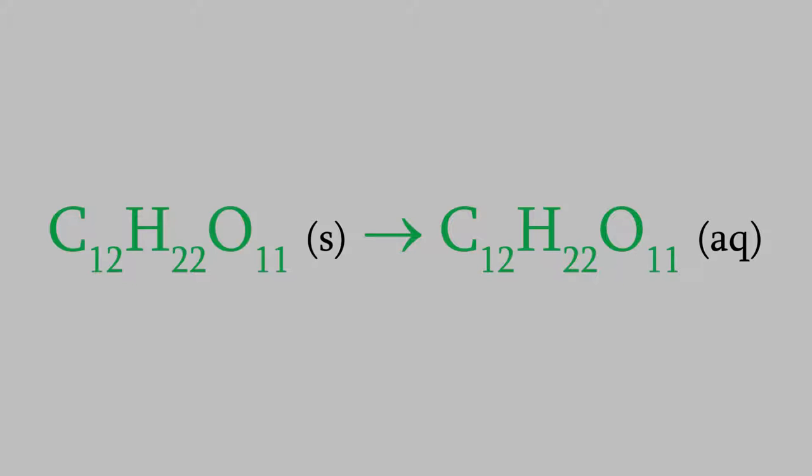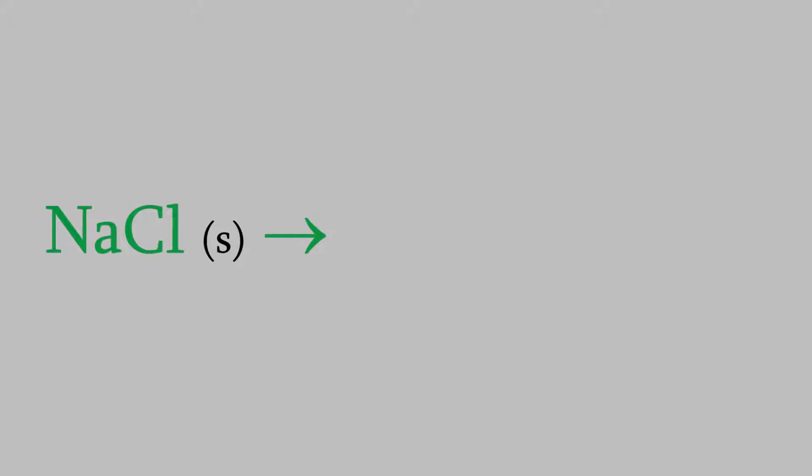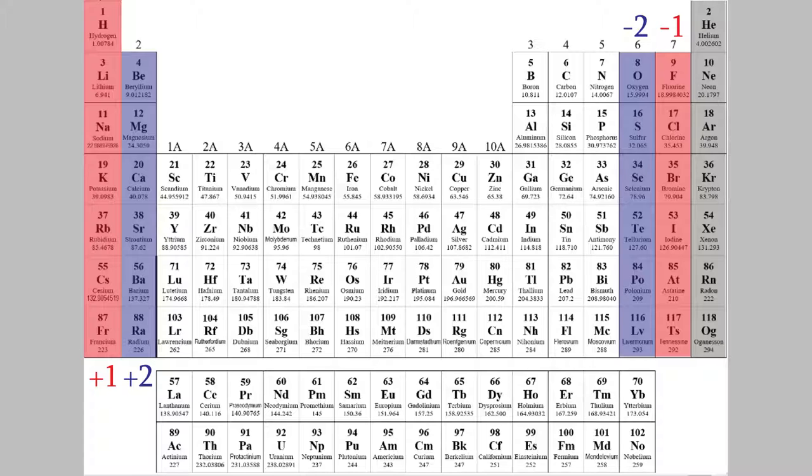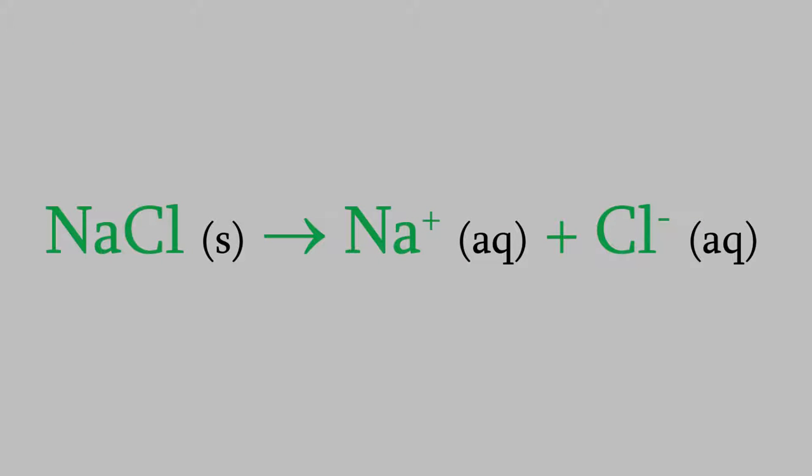But what if we have an ionic compound? For example, suppose we dissolve salt, sodium chloride, in water. It turns out that when you dissolve an ionic compound in water, the molecules break up into the ions they're made of. So salt breaks up into sodium ions and chloride ions. If you look at the periodic table, you can see that sodium has a charge of plus one, and chloride is minus one. So those are what we get on the product side of our reaction. These dissolve in the water, so that makes them aqueous ions, and we write (aq) after each.